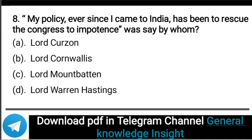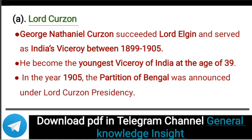Next question: 'My policy ever since I came to India has been to rescue the Congress to impotence' — was said by whom? The correct answer is option A, that is Lord Curzon. George Nathaniel Curzon succeeded Lord Elgin and served as India's Viceroy between 1899 and 1905. He became the youngest Viceroy of India at the age of 39. In the year 1905, the partition of Bengal was announced under Lord Curzon's presidency.